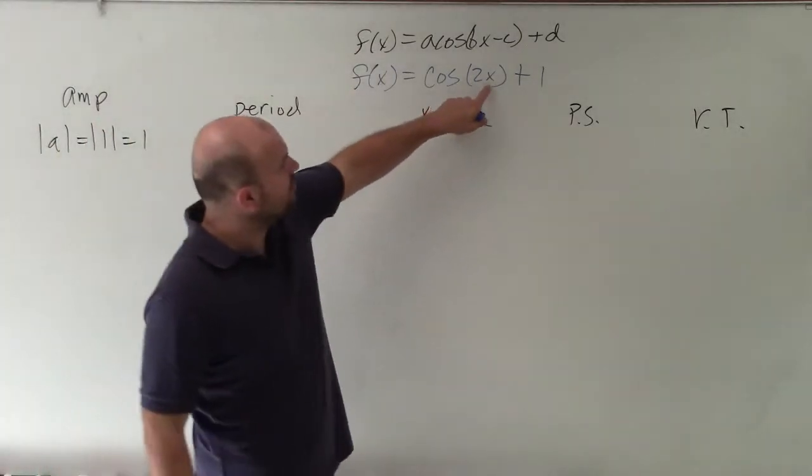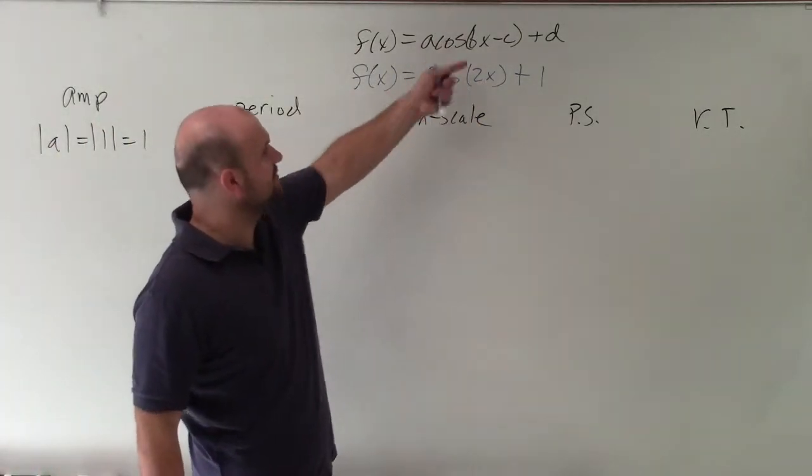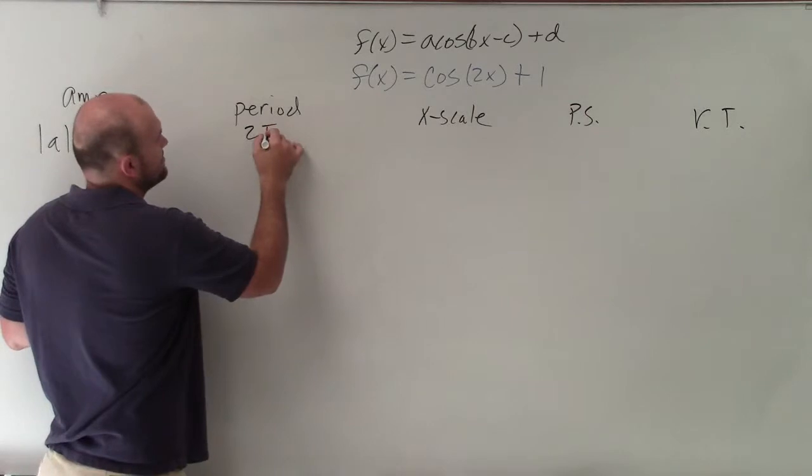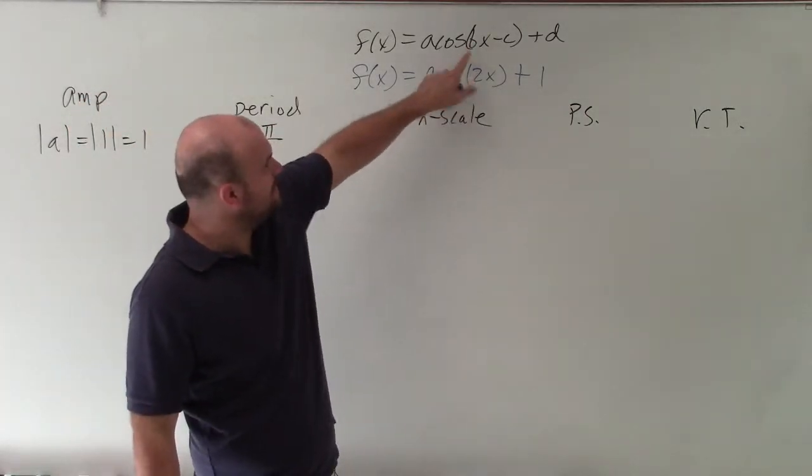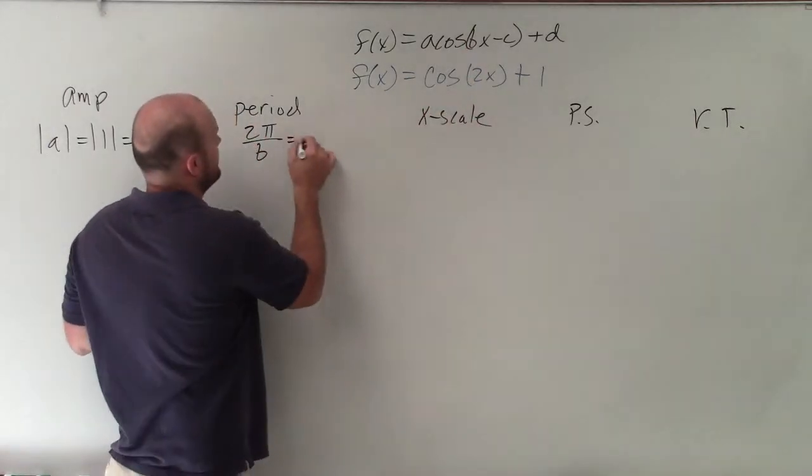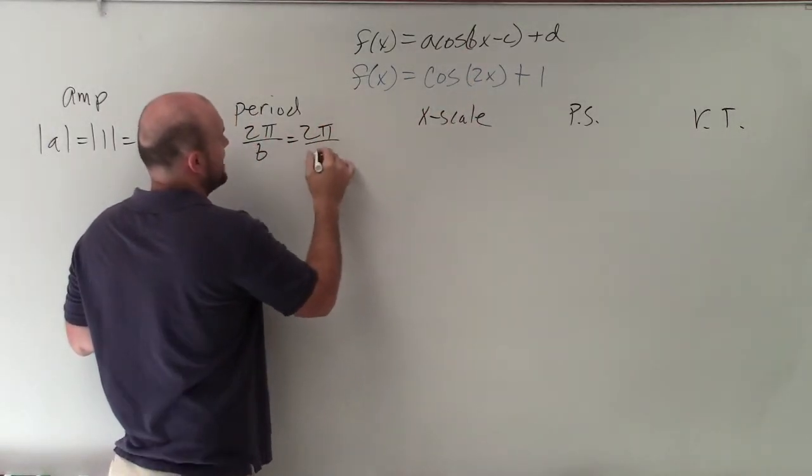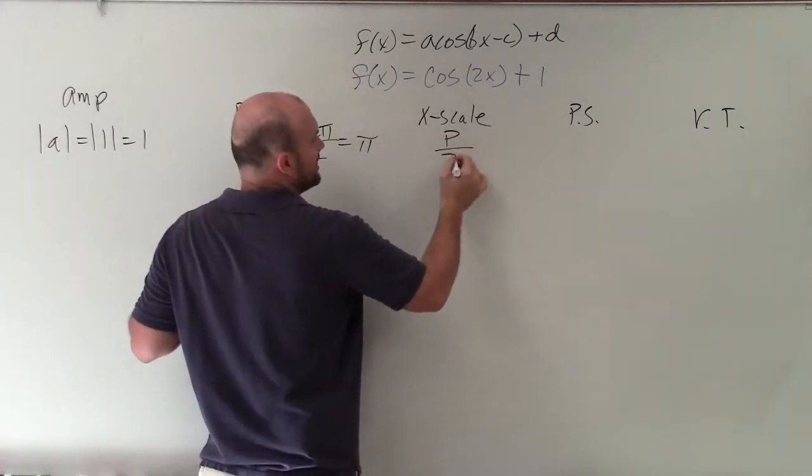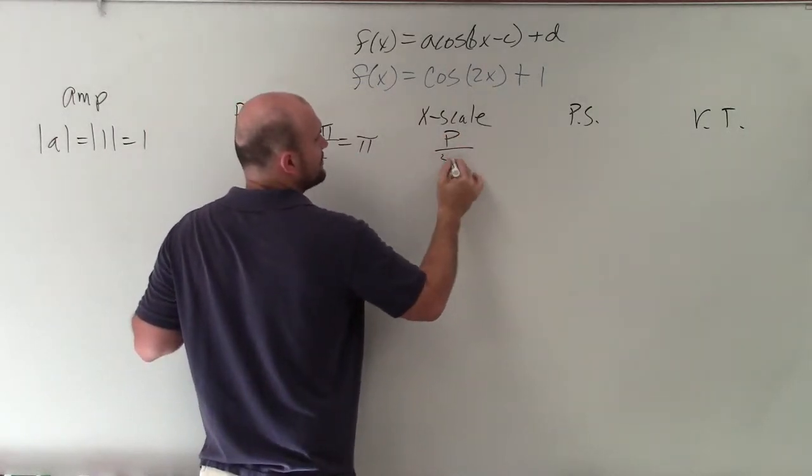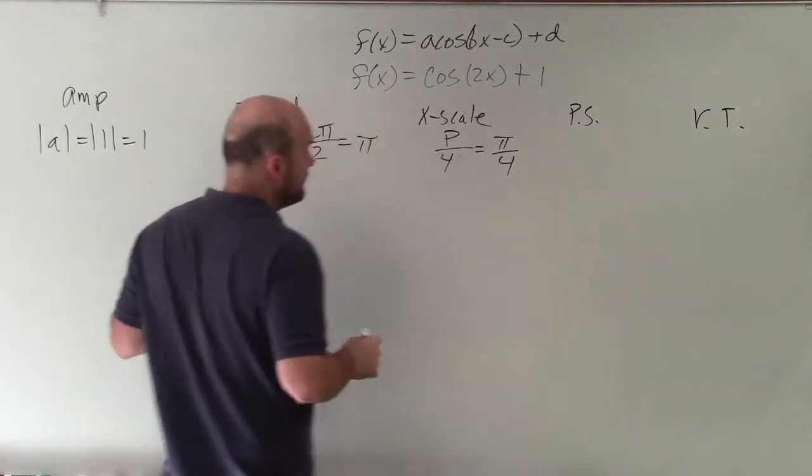Our period is going to be 2 pi divided by b. Here, you can see that my b is equal to 2. Therefore, it's 2 pi divided by 2, which is equal to pi. The x-scale is just your period divided by 4. So in this case, that's going to be pi divided by 4.